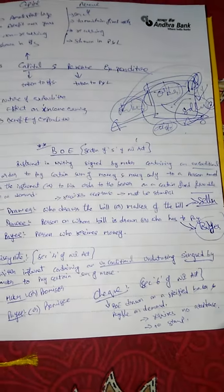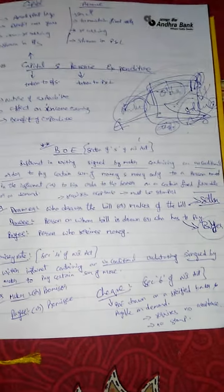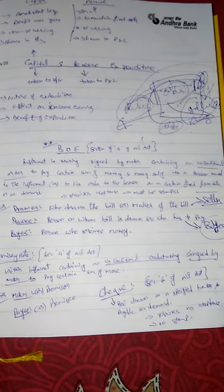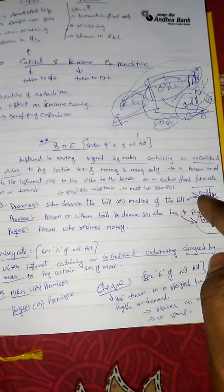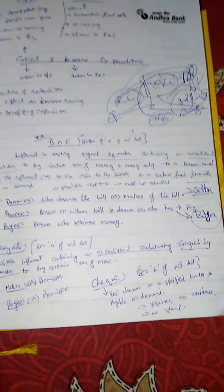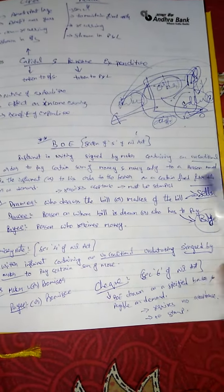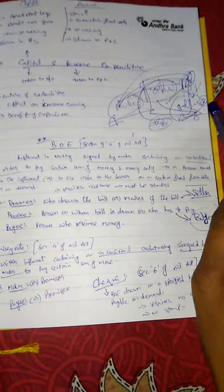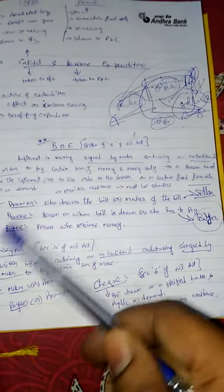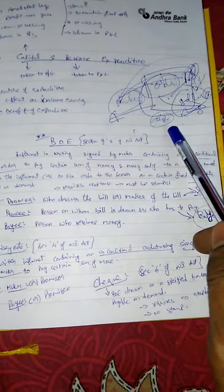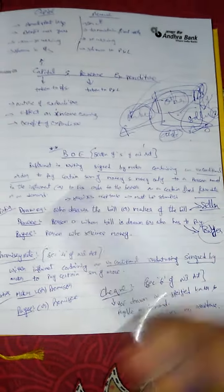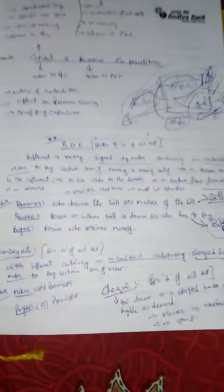The drawer and payee can be the same person — the seller who makes the bill can also receive the payment, making him the payee. Or the payee can be a different person: the seller can endorse the bill in favor of a third person, and that third person becomes the payee. In our example, A is the drawer, B (the buyer who needs to make the payment) is the drawee, and C (in whose favor the bill is endorsed) is the payee.